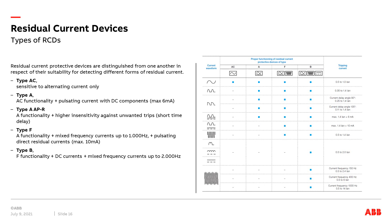There are different types of RCDs available. The cost increases significantly with functionality, so from a commercial point of view it makes sense to select the right RCD depending on the application. If the connected devices are mainly ohmic loads like heaters, it is sufficient to use an AC type. However, nowadays many switch-mode power supplies and electronic inverters are common even in private homes. These devices generate pulsating DC that could flow through an RCD. If this DC value is bigger than 6mA, the RCD can become blind and will no longer detect a real fault. In some countries the AC type is not allowed, so the A type must be used instead.